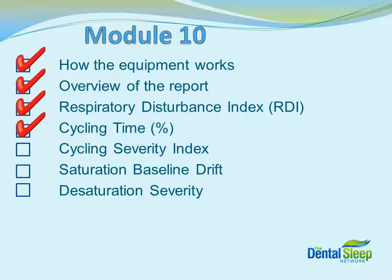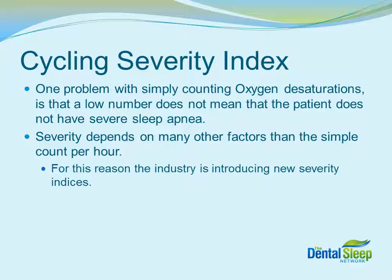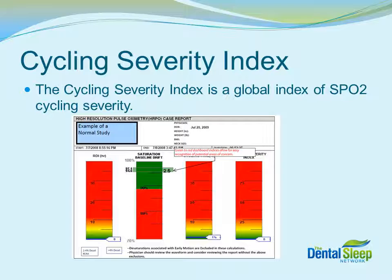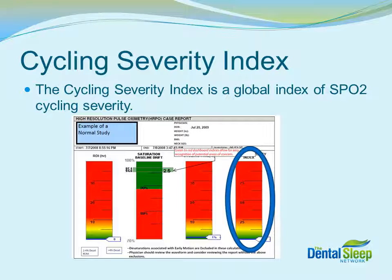Now that we've learned about the cycling time, let's discuss the cycling severity index. The cycling severity index is also shown on the graph. We can count the number of desaturations a patient has and average them over the night. But one of the problems with counting desaturations is that a low number does not mean that the patient does not have severe sleep apnea. Severity depends on many other factors other than a simple count per hour. For this reason, new severity indices are being created. On the report, the cycling severity index is shown on the far right. Green is considered mild risk, yellow to orange is moderate risk, and anything in the red range is considered high or severe risk.